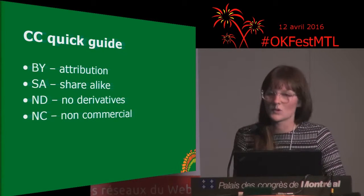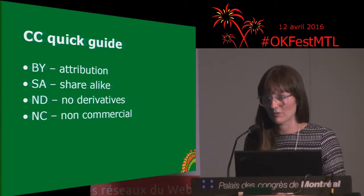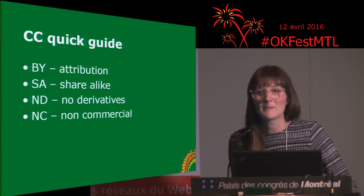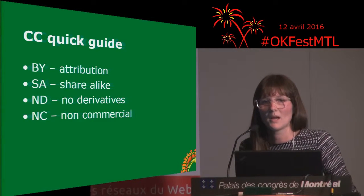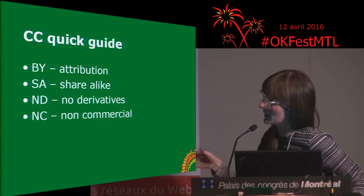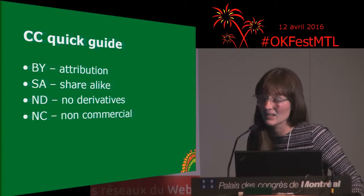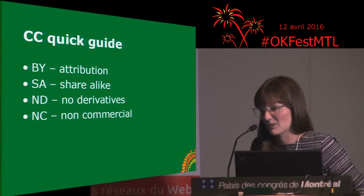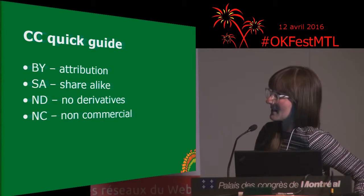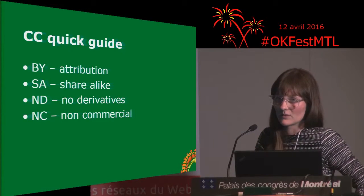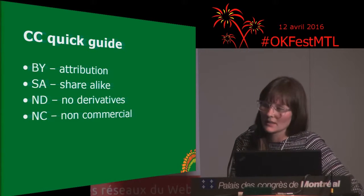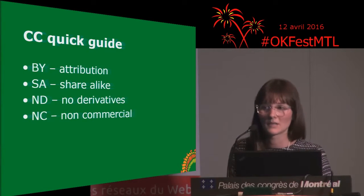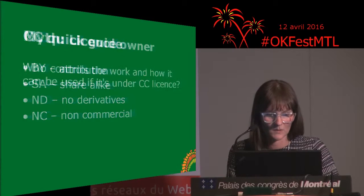No derivatives means you can't modify it — you have to take the whole thing. So if you have a book under CC BY-ND, people aren't allowed to take excerpts unless they give the original attribution. No derivatives also means you can't translate it or remix it. People often like this for images. Non-commercial means that while people can take and use the content, they can't make any money off of it — whether it's a company or an individual.